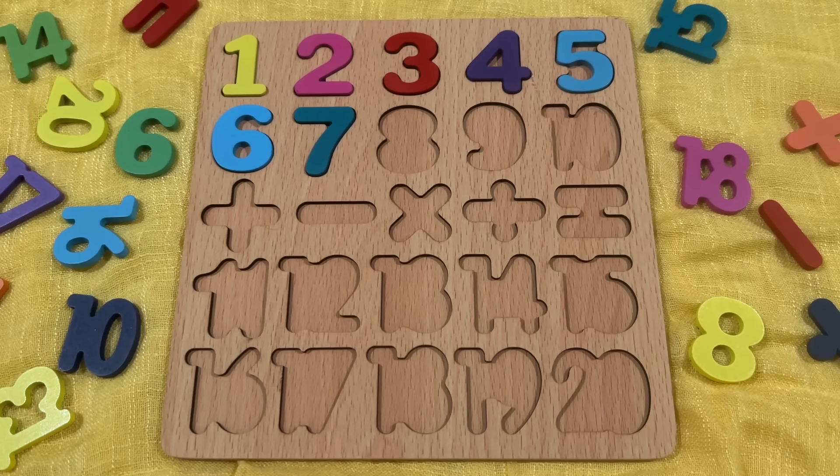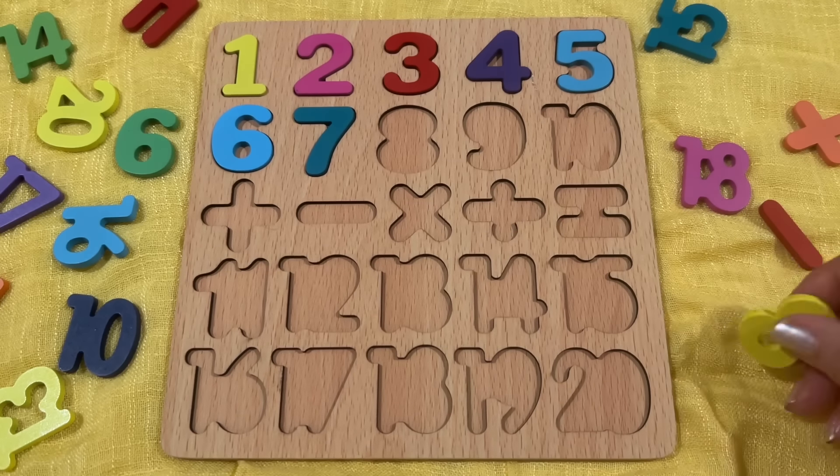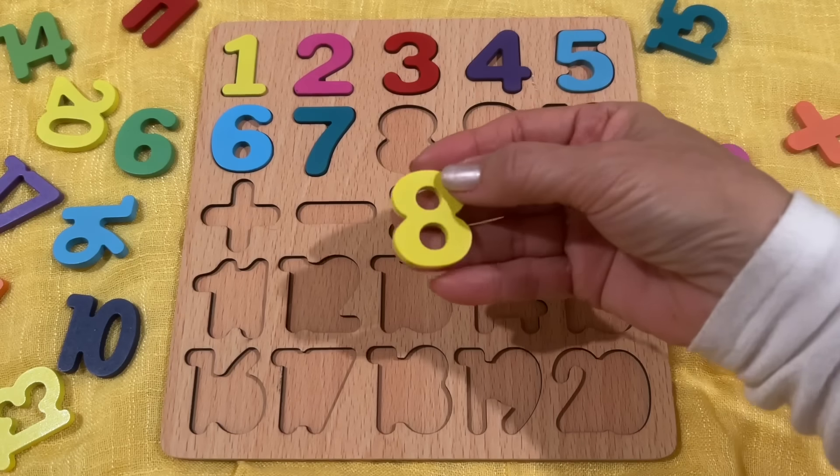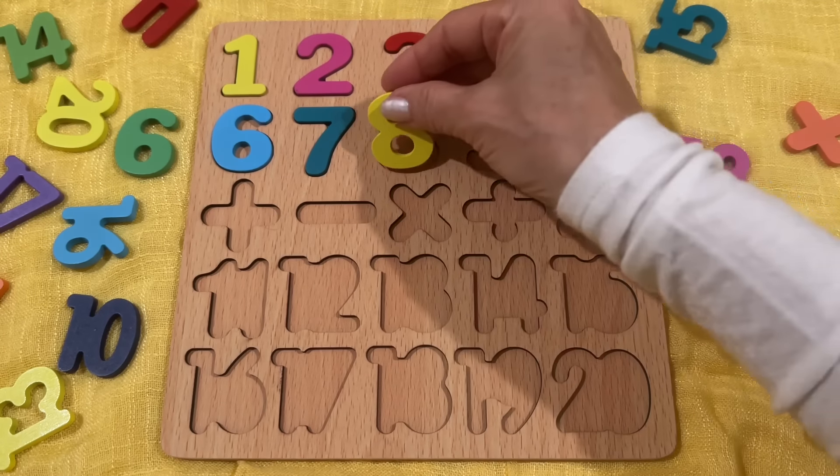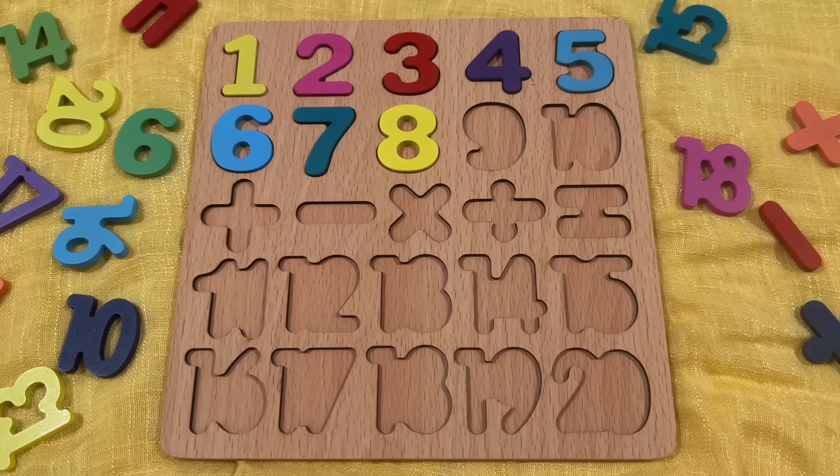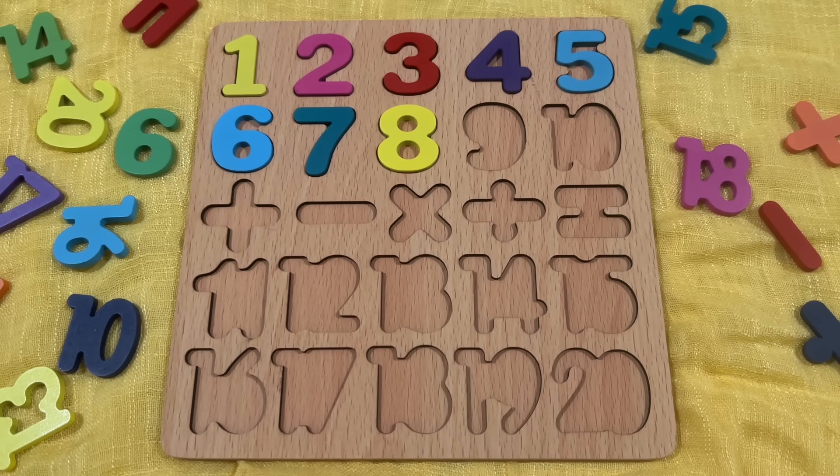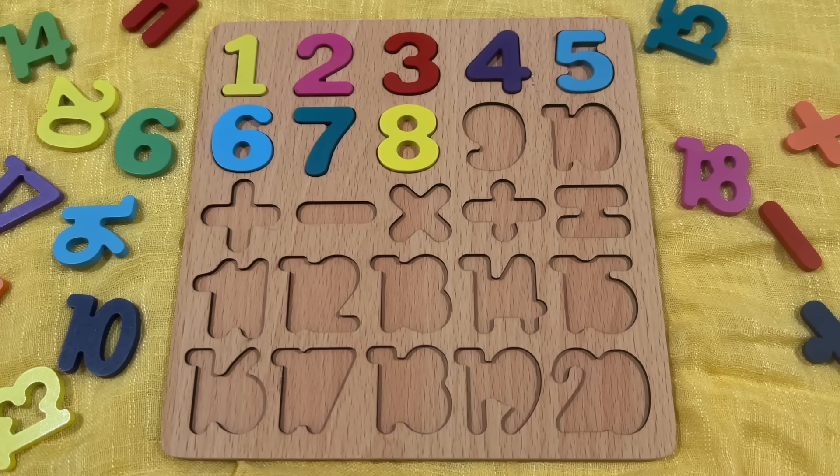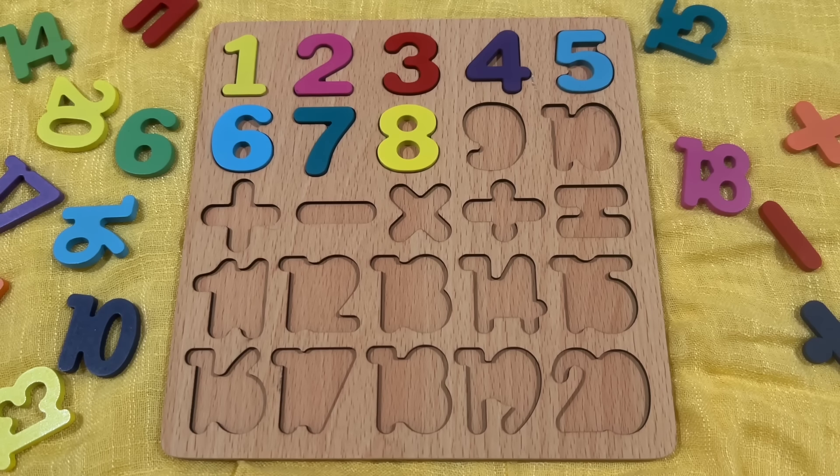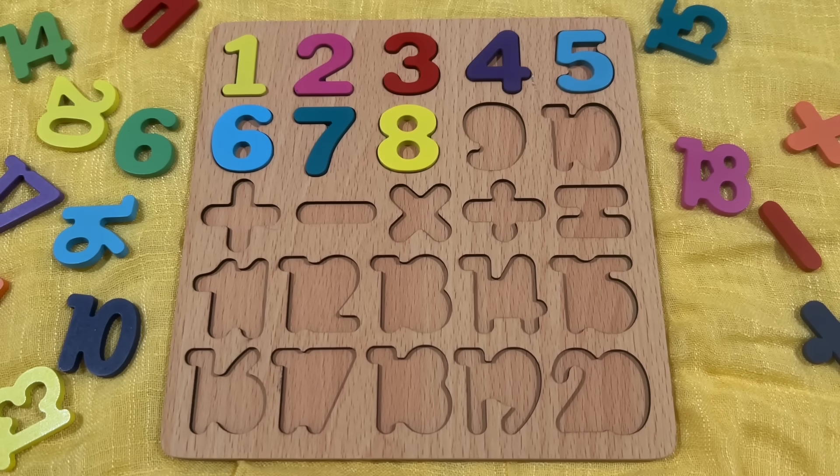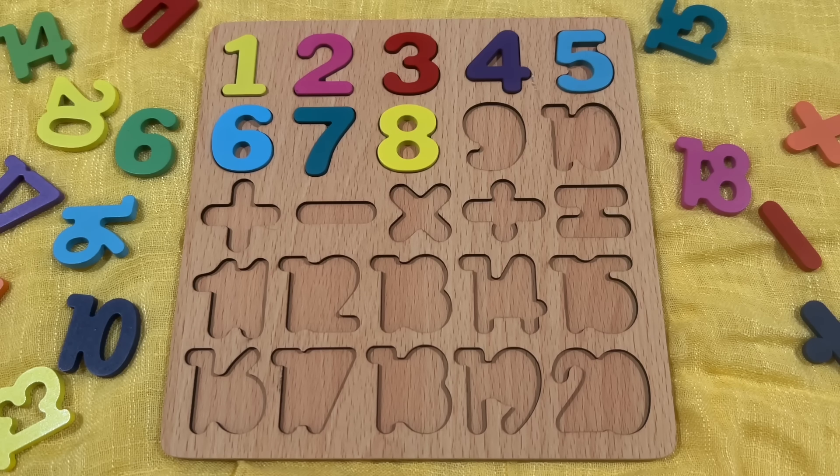Number six in Korean is yuk. Korean is 7, 7. Next, what comes next? Number 8, number 8. In English, we say it's 8. In Korean, we say 8, 8. In Korean, number 8 is pronounced 팔 (pal).